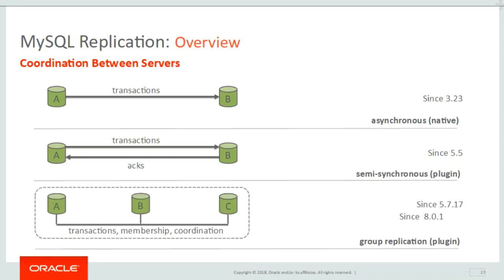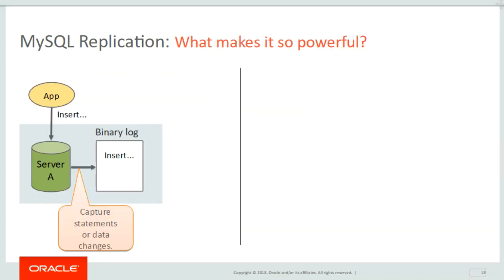Group replication, where members interact with each other through message passing, which is guaranteed as atomic and in total order by the group communication system. With this, more advanced database replication solutions can be built.